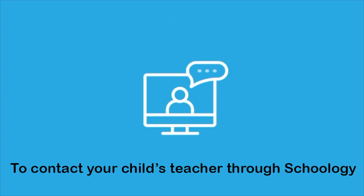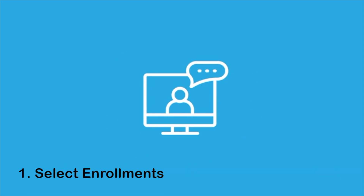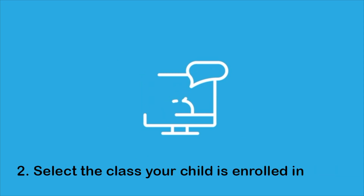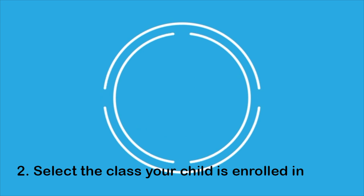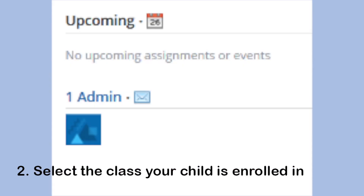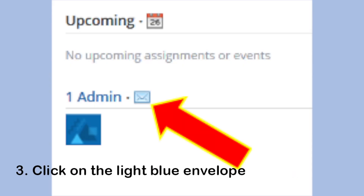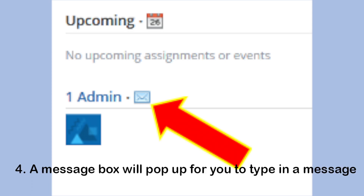If you would like to contact one of your child's teachers through Schoology: Number 1, select Enrollments. Number 2, select the class your child is enrolled in. Number 3, click on the light blue envelope. Number 4, a message box will pop up so you can type in a message to the teacher.